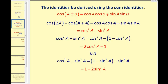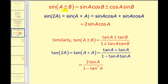For the sine of two A, we again use the sum identity with A plus A and obtain two times sine A cosine A. For tangent, we use the sum identity with angle A plus angle A and obtain two tangent A divided by the quantity one minus tangent squared A. You may want to pause the video and take a closer look.